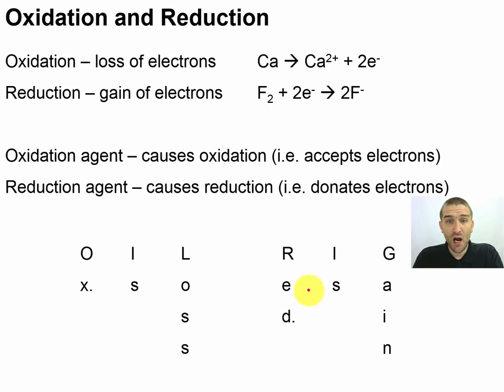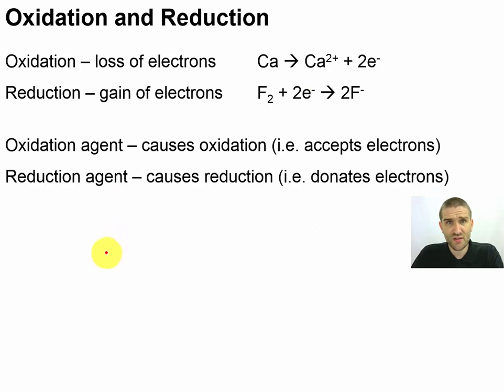Reduction agents, similarly, are going to cause something else to be reduced, and that means they're going to donate electrons to cause something else to gain electrons. So, this mnemonic will help you keep straight this one, and then the agent will let you make that tweak. Now, let's keep going with some of the jargon that we use for oxidation reduction reactions.